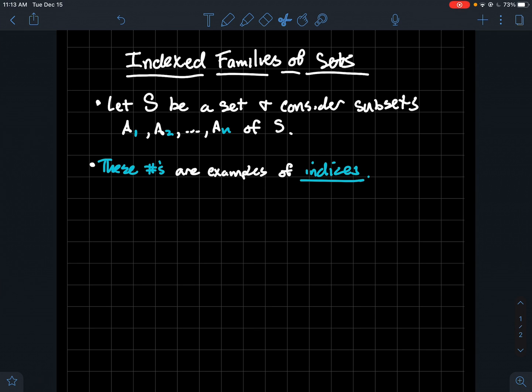So what are those? Those numbers are examples of what are called indices. The indices that we choose are called an indexing set.